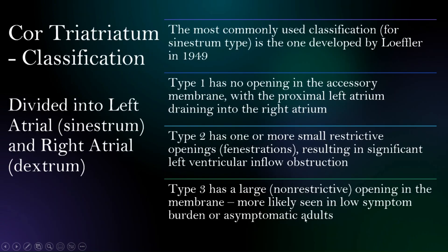In terms of classification, the most commonly used system is one developed by Loffler in 1949, and it has three different types. With type 1, there's actually no opening in the membrane. With type 2, there are one or more small restrictive openings, or so-called fenestrations, resulting in significant left ventricular inflow obstruction. Then there's type 3, which has a larger non-restrictive opening, more commonly seen in adults that haven't been diagnosed to that point.